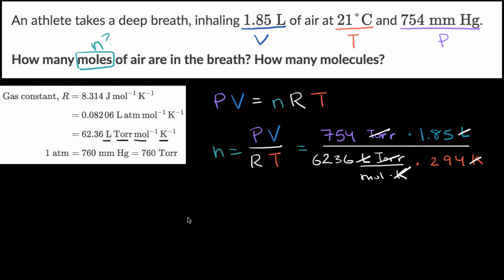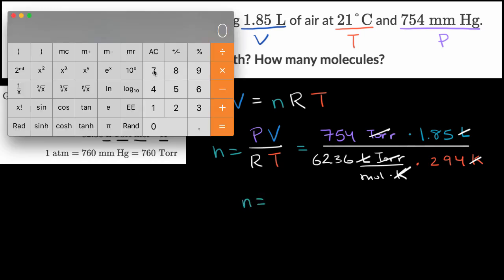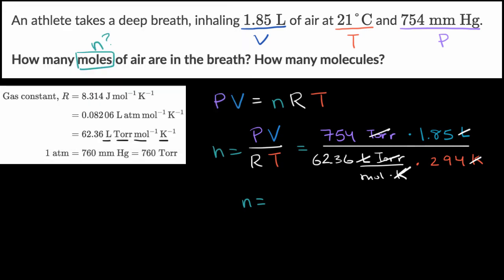So n is going to be equal to 754 times 1.85 divided by 62.36 and then also divided by 294. And let's see how many significant digits we have. We have three here, three here, three here, four here. So when we're multiplying and dividing, we just want to use the fewest amount that I'm dealing with. So I want to go to three significant figures. So this is going to be 0.0761 moles. That's the number of moles of air in the breath.